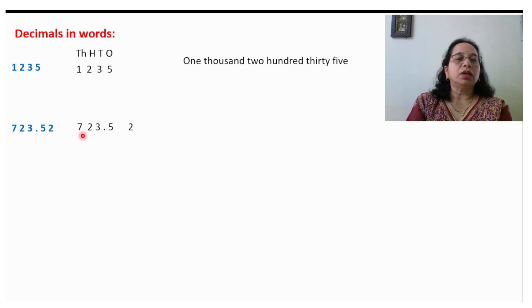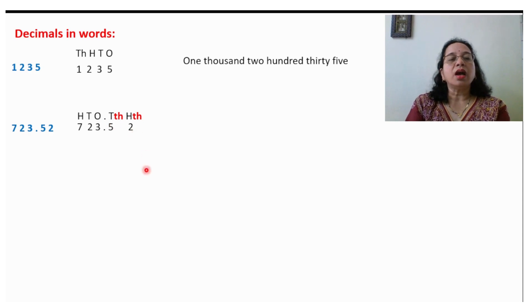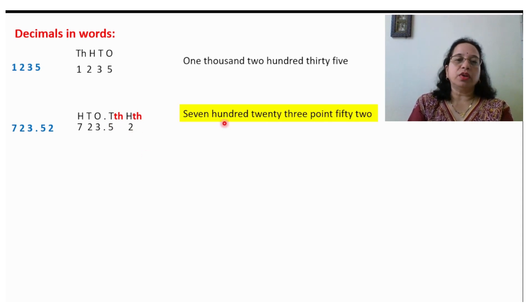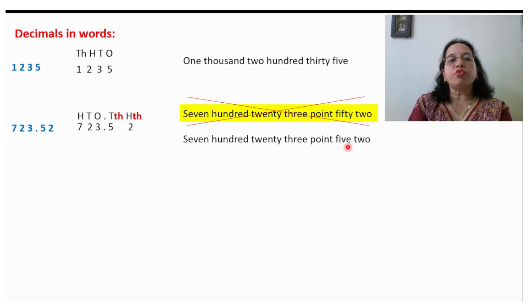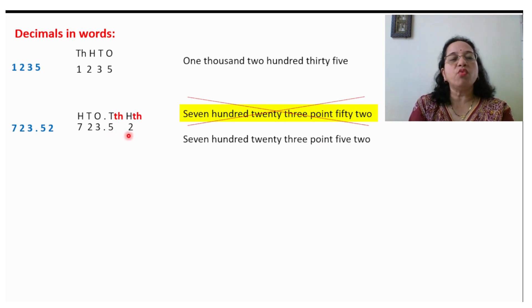Take another example. Write down the number and write the places — this is the decimal, this is the tenth, and this is the hundredth. Most of the time students are reading 723.52 as 'seven twenty-three point fifty-two,' but that is the wrong way. The correct way: after the decimal we read and write one digit at a time.